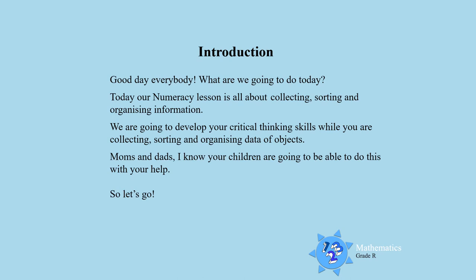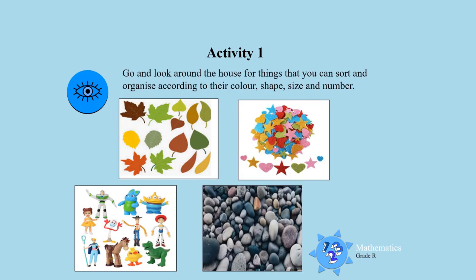So let's go! Activity one: I want you to go and look around the house for things that you can sort and organize according to their color, their shape, their size and number. So go, boys and girls, look around the house to find any objects that you can sort.